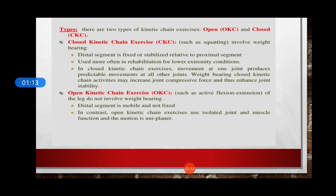So we have two types of kinetic chains — the kinematic chain can be open or closed. In an open kinematic chain, one joint can move independently of others in the chain. When one end of the chain remains fixed, it creates a closed system or closed kinematic chain. Under these conditions, movement at one joint automatically creates movement in other joints in the chain.